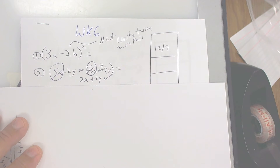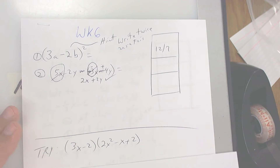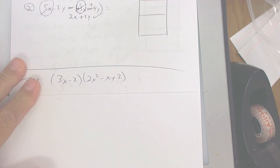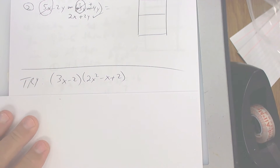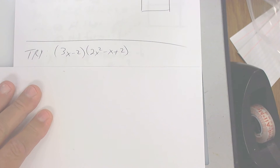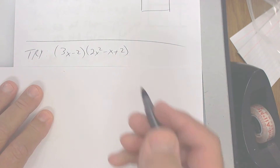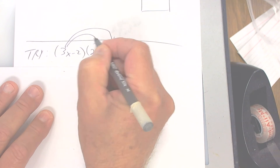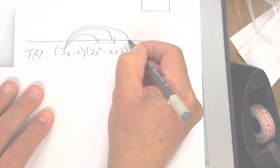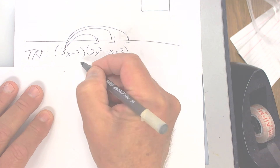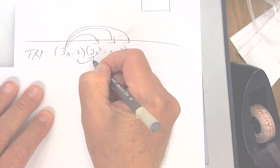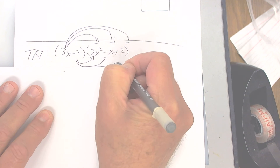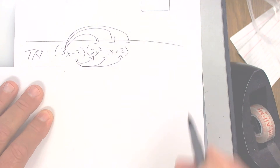All right, on a new sheet of paper I want you to try this one. What you're doing here is you're taking this to all three of these, and then you're taking this one to all three of these. Try that right now.